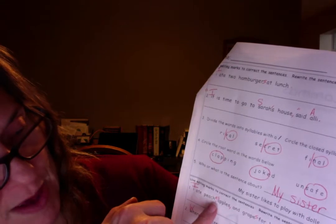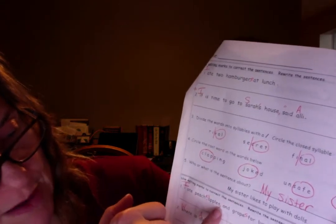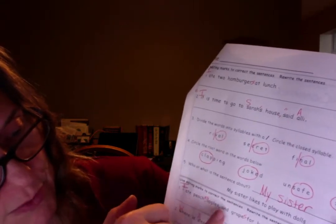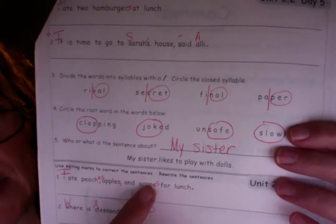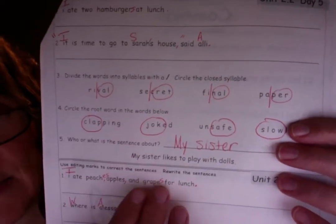And we need a comma after peaches and a comma after apples. That was a series of three things, right? Peaches, apples, and grapes. And grapes needed an S on the end. Not an E-S. It already has an E. We just needed an S to make it plural.